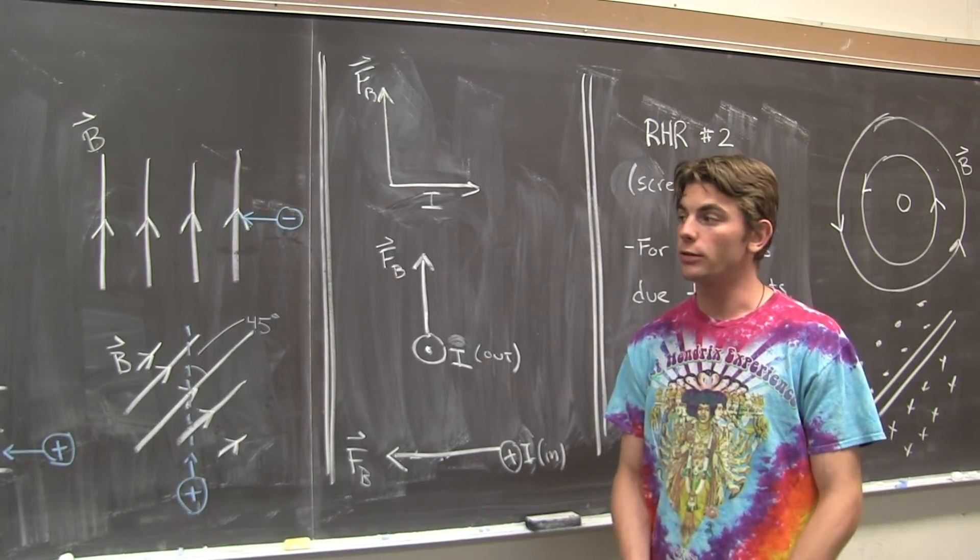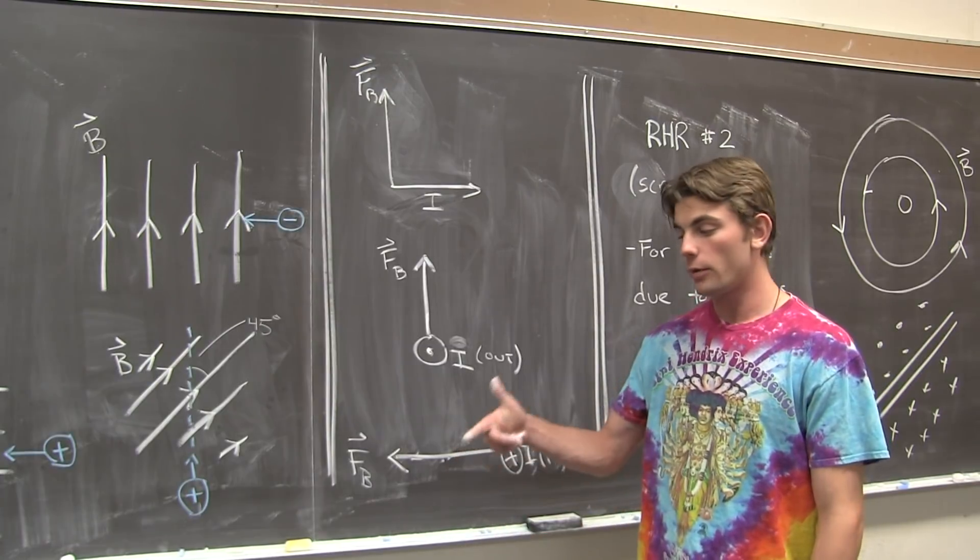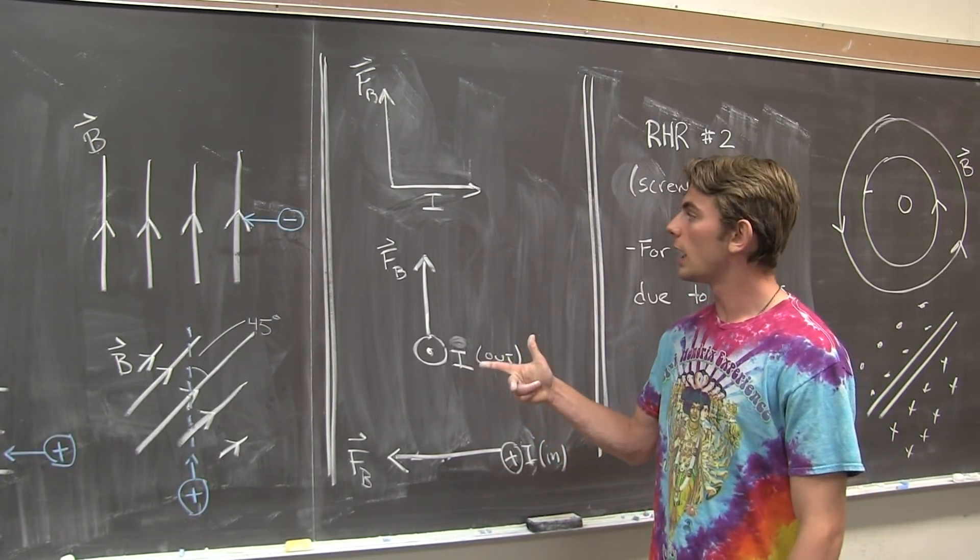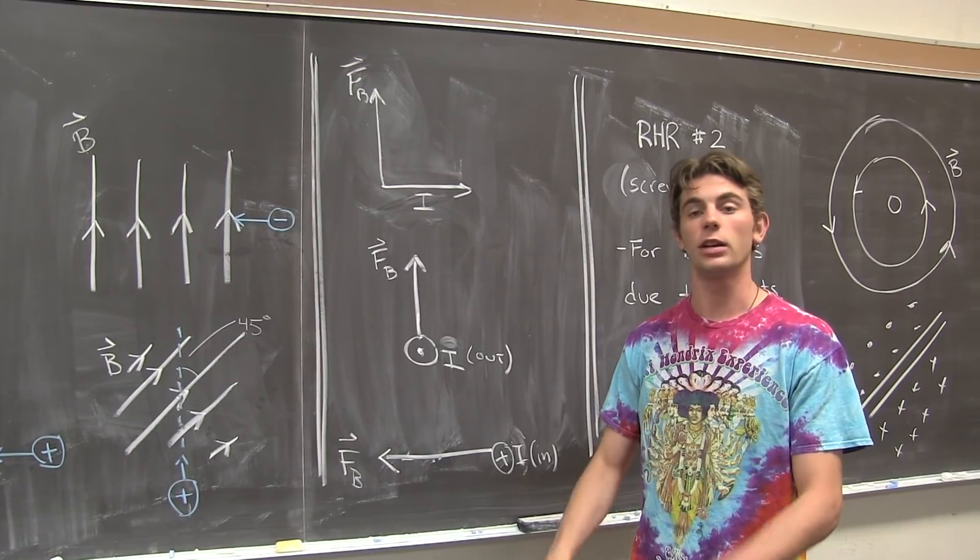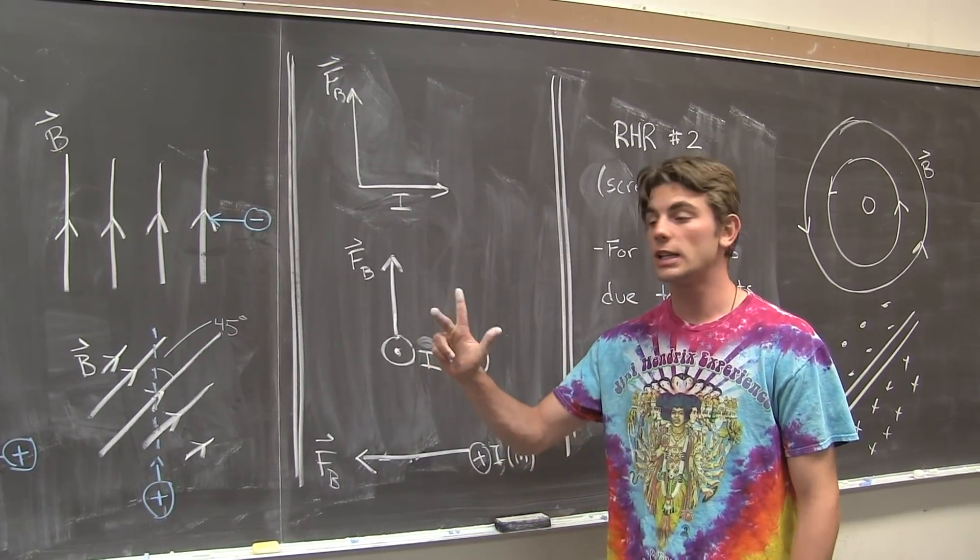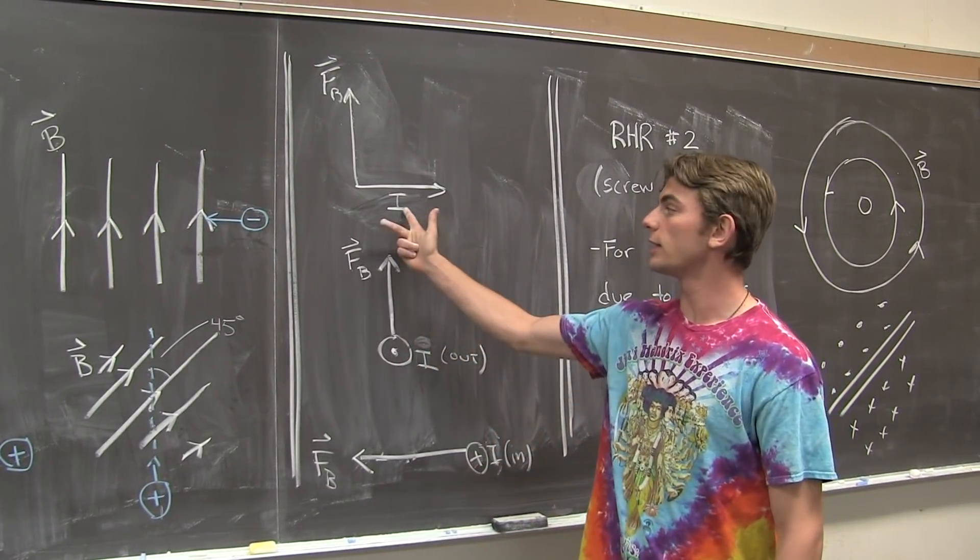So, for these problems, we are given the resultant force, which is the thumb in our right hand rule, and we are also given i, which acts as the index finger, and we are asked to find b, so we need to find the position of our middle finger given this configuration.